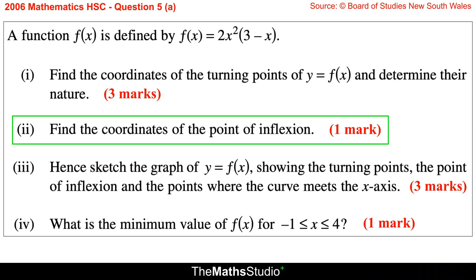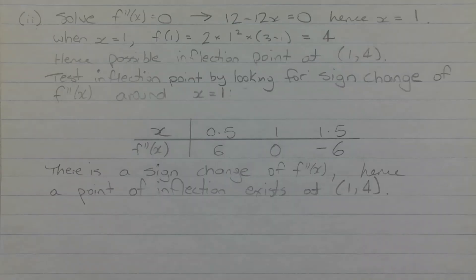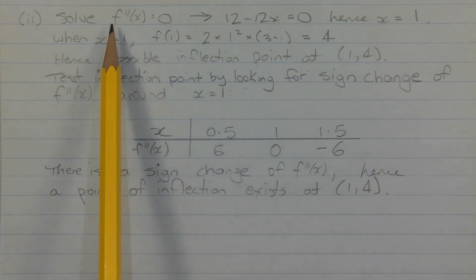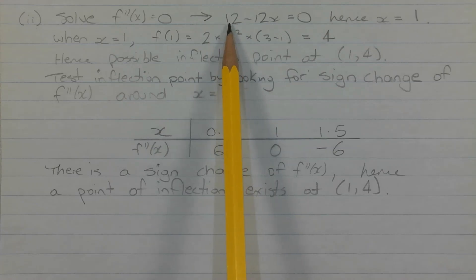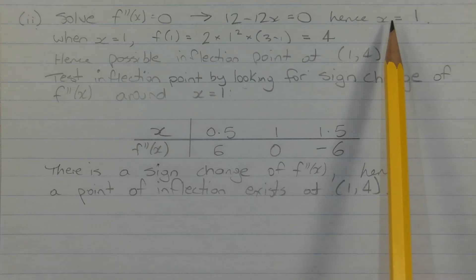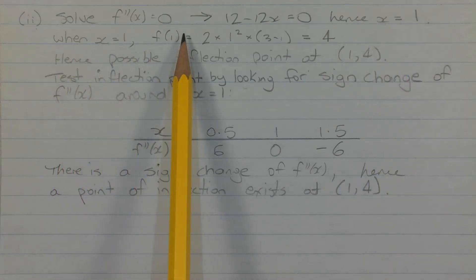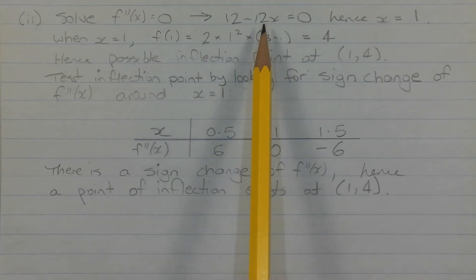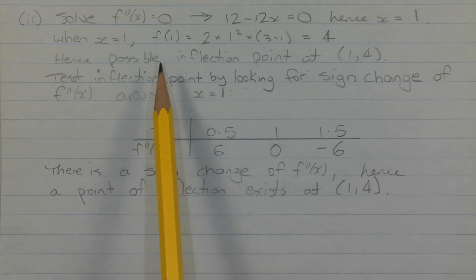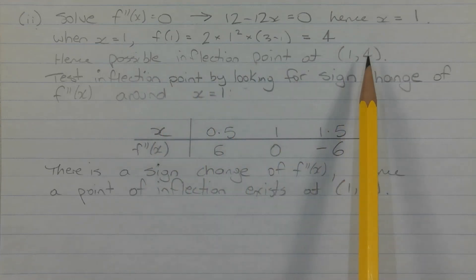Part 2: Find the coordinates of the point of inflection. To find points of inflection we solve f''(x) = 0. From Part 1, f''(x) = 12 − 12x, so solving 12 − 12x = 0 gives x = 1. When x = 1, f(1) = 2 × 1² × (3 − 1) = 4. Hence a possible point of inflection exists at (1, 4).